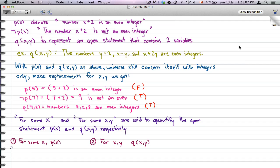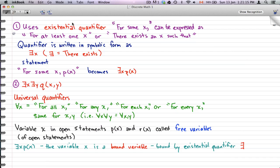Remember, for some x, P(x), and for some x,y, Q(x,y). We're going to talk about 'for some x, P(x).' Number one uses an existential quantifier. That's what it's called. 'For some x' can also be expressed as 'for...